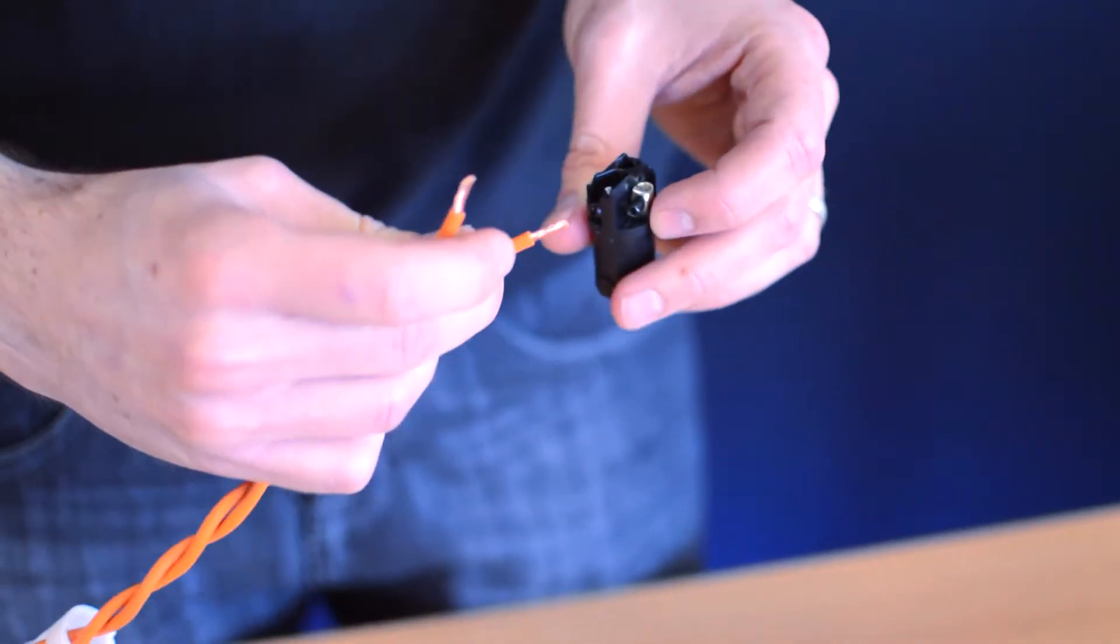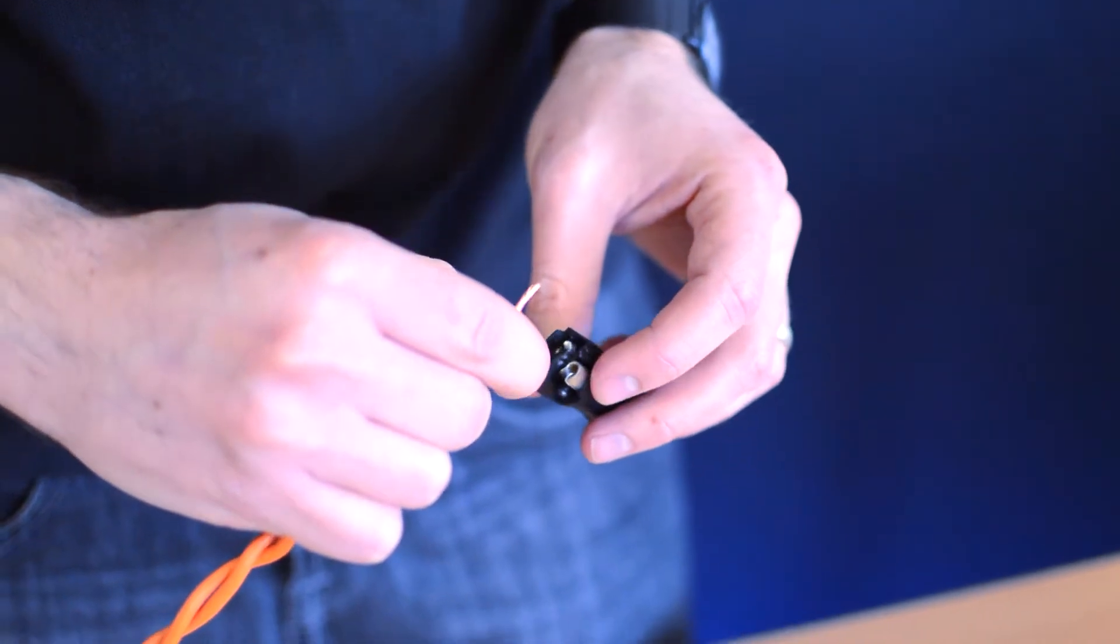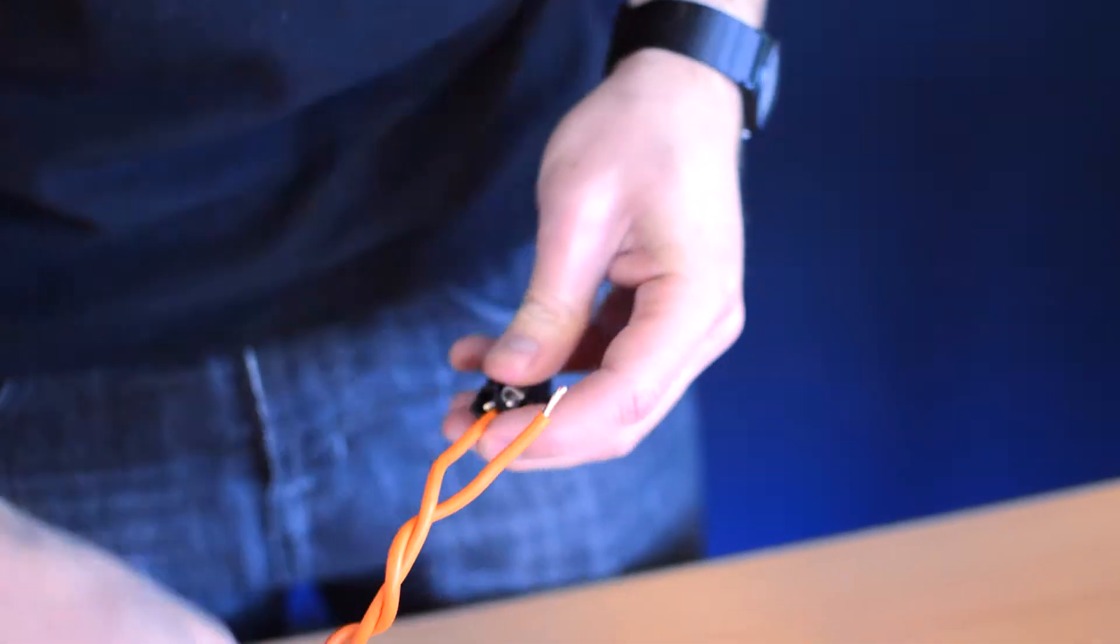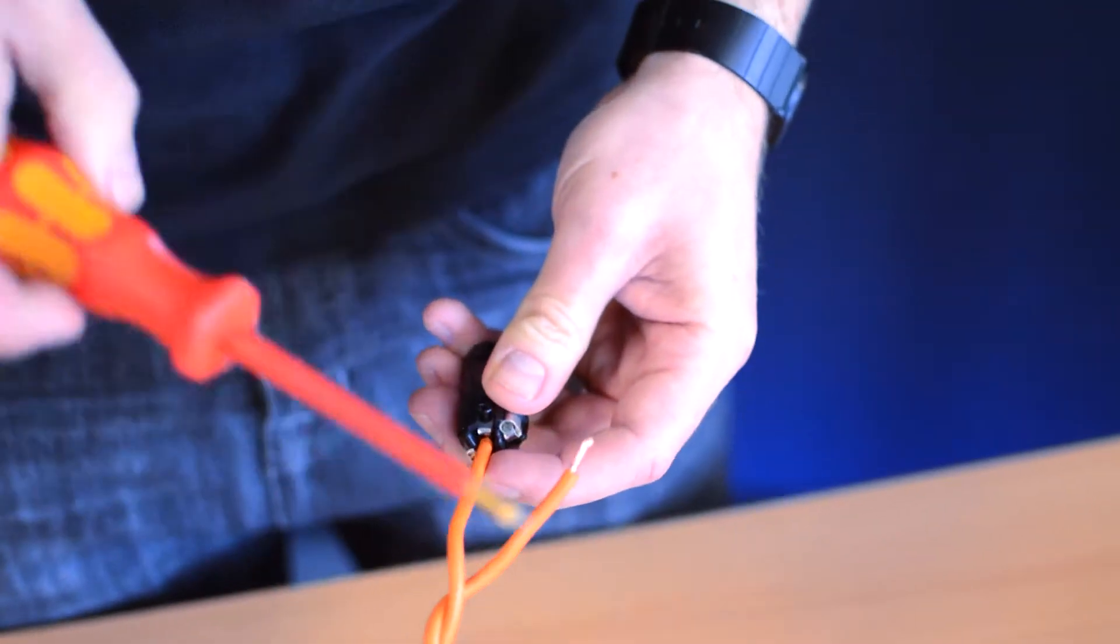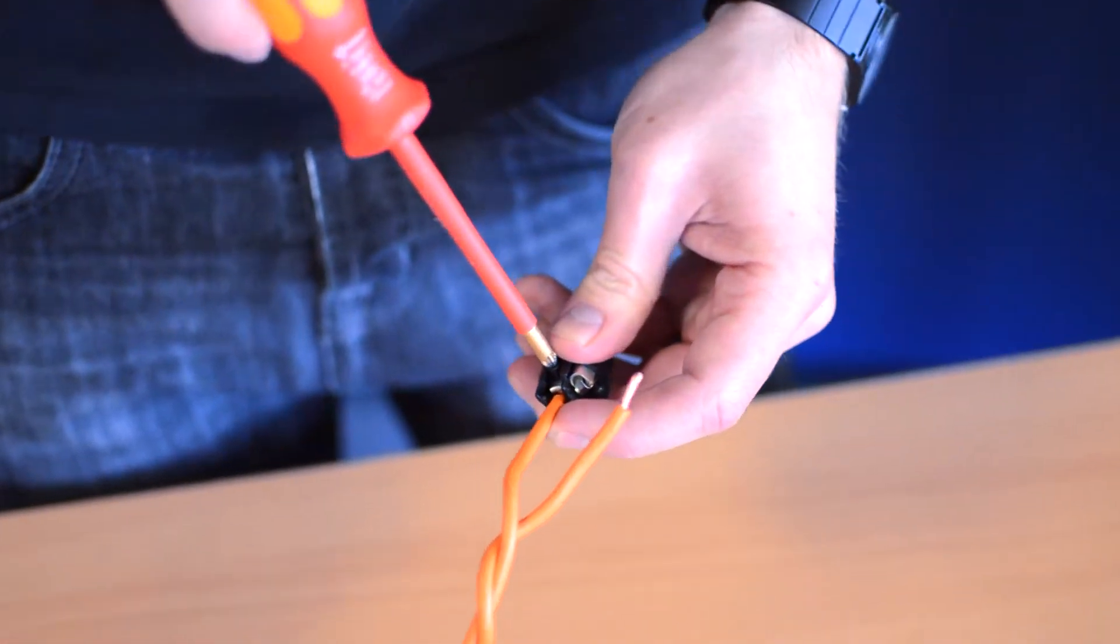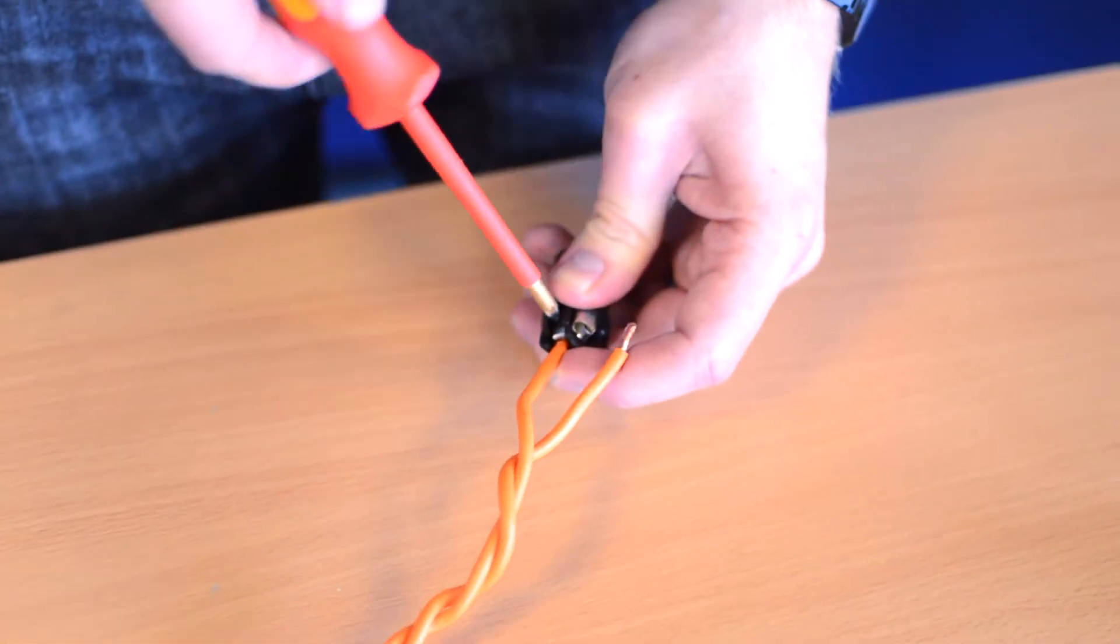This is minus one. What we'll do is get the first end of your feed cable and just pop that in plus one there. You'll probably have to loosen the screws off a little bit before you start, and then just tighten that up.